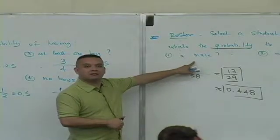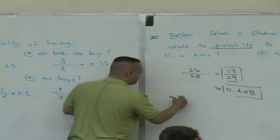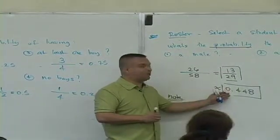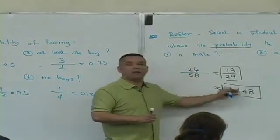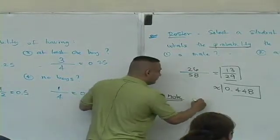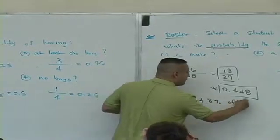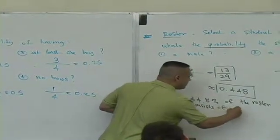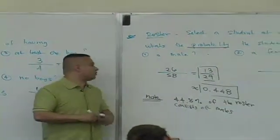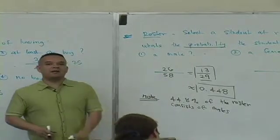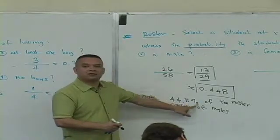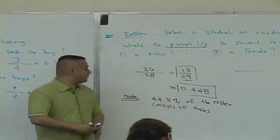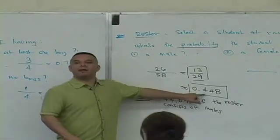Notice this. Have you guys seen any of this stuff before? What is 0.448 as a percent? Every decimal can be written as a percent. What's 0.448 as a percent? 44.8 percent of the roster consists of males. This is the relationship between probability and percent. So if I close my eyes and try to pick a student at random, the likelihood that it's going to be a male — since it's 44.8 percent — the decimal representation is 0.448. That's a probability.